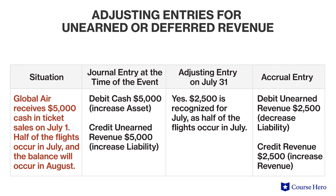Once the products are delivered or the service is rendered, the deferred or unearned revenue then becomes earned revenue. For example, Global Air receives $5,000 cash in ticket sales on July 1st. Half of the flights occur in July and the balance will occur in August. Global Air has an obligation — a liability — to provide services at a future date. Since the flights will take place partly in July and partly in August, only half of this amount is July revenue. The remaining balance is unearned revenue until the August flights take place.